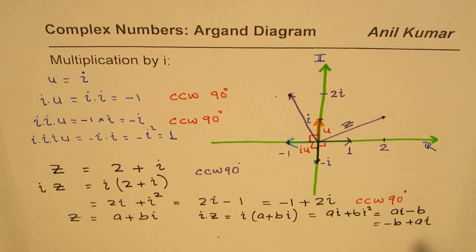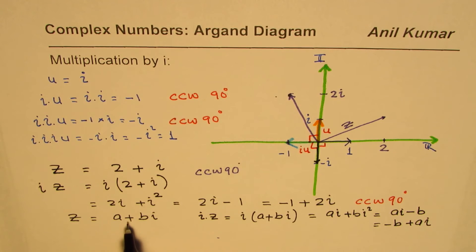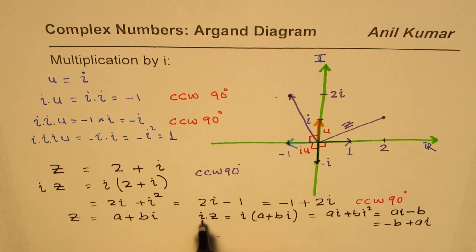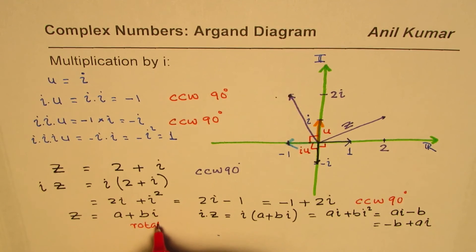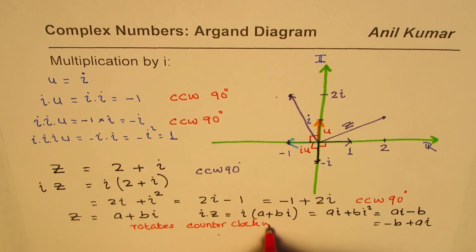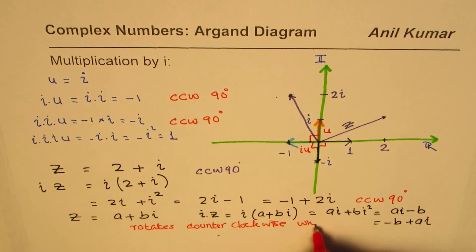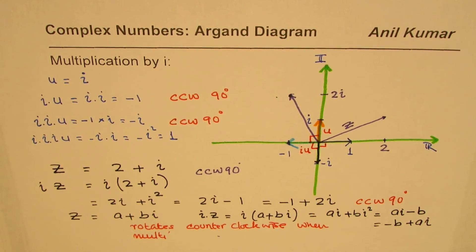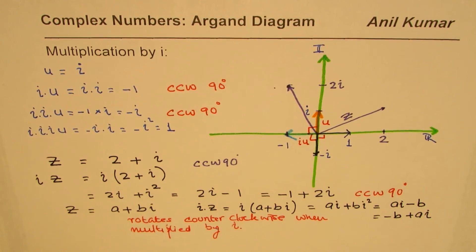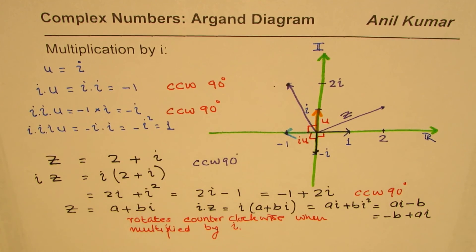The real part here is minus b, and the pure imaginary part will be ai. So as you can see, in general, if I take any complex number of the form a plus bi, we land up with minus b plus ai when we multiply by i. So that clearly indicates that the complex number rotates counterclockwise when multiplied by the imaginary number i. So this is what we conclude. And that's a very important conclusion.